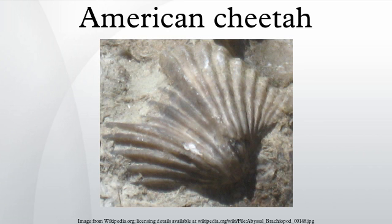M. inexpectatus was more similar to the cougar than was M. trumani, its proportions being between that of the cougar and M. trumani. It had fully retractable claws and, with its lighter build, M. inexpectatus was probably faster than the cougar. Thanks to its retractable claws, it is also possible that it was more adept at climbing than M. trumani.